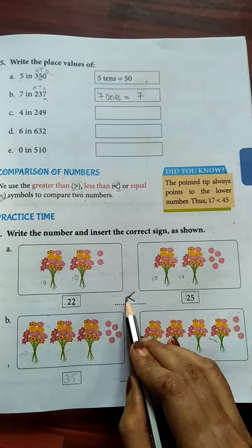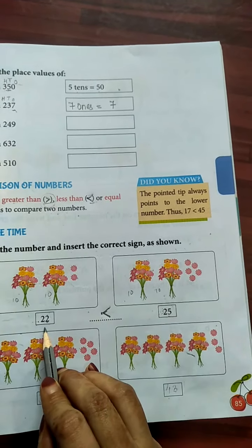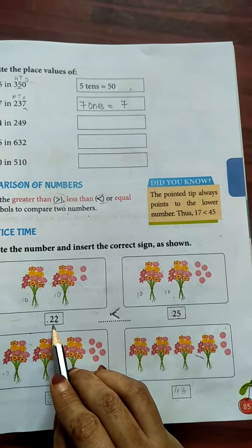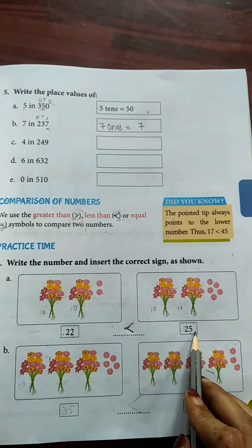This pointed tip always points to the lower number. So 22 is lower number. 22 is less than 25.